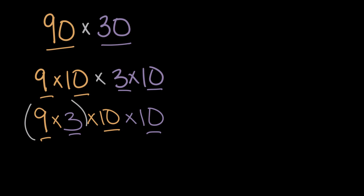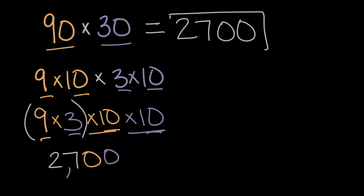Nine times three is 27. 27 times 10 will be 27 tens, or 27 with a zero on the end. And 270 times 10 will be 270 tens, or 270 with a zero on the end. So going back to the original question, 90 times 30 is equal to 2,700.